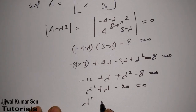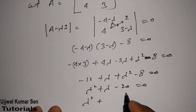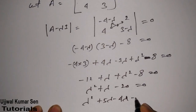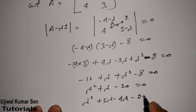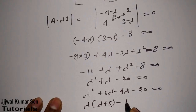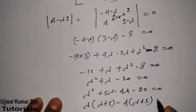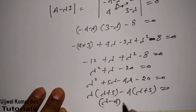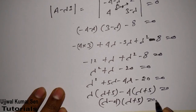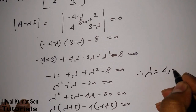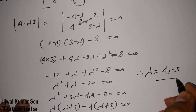So we get lambda squared plus lambda minus 20 equals 0. Factoring: 5 and 4 multiply to 20, so lambda squared plus 5 lambda minus 4 lambda minus 20 equals 0. This gives lambda(lambda plus 5) minus 4(lambda plus 5) equals 0, and therefore (lambda minus 4)(lambda plus 5) equals 0. So lambda equals 4 and minus 5.